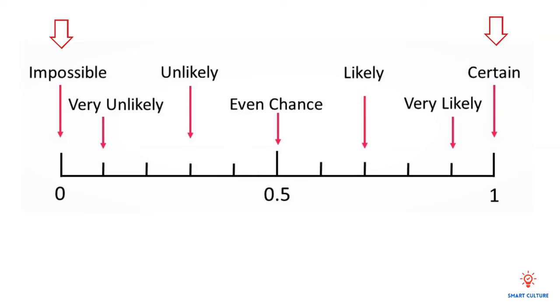Between the two ends of this line, you'll see we have word descriptions. Let's have a look: very unlikely, unlikely, even chance, likely, and very likely.